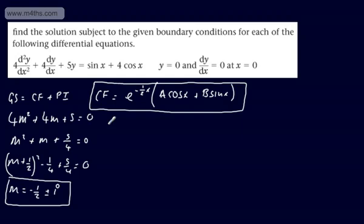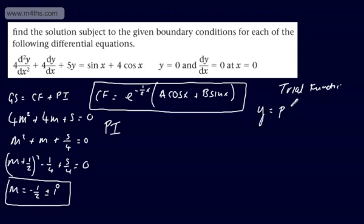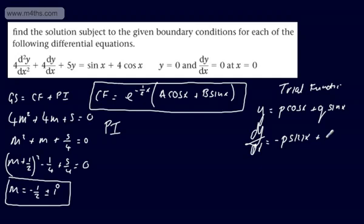What we now need to find is the particular integral, which is the solution to the whole equation. The trial function is going to be of the form y = p cos x + q sin x. The derivative dy/dx = −p sin x + q cos x.